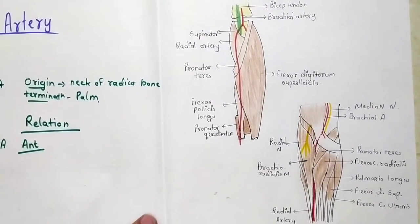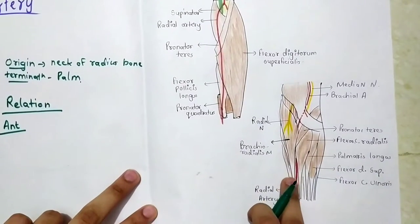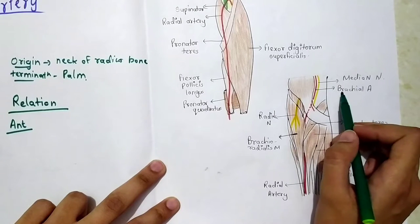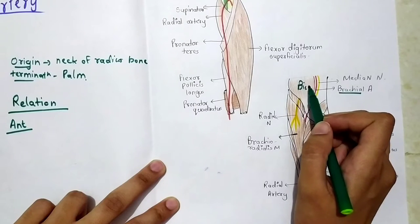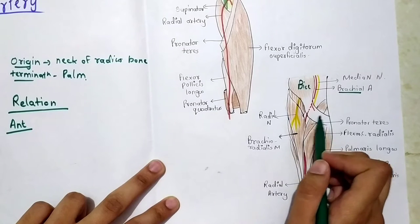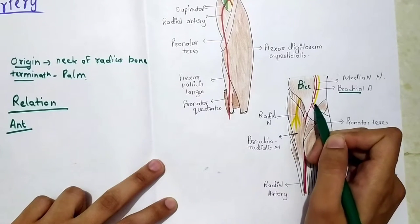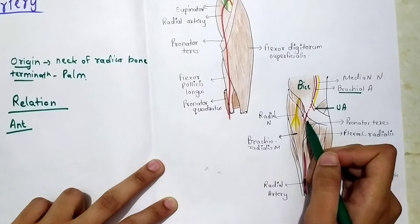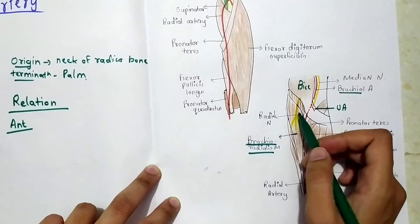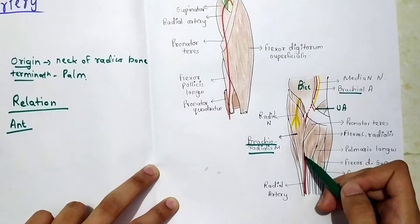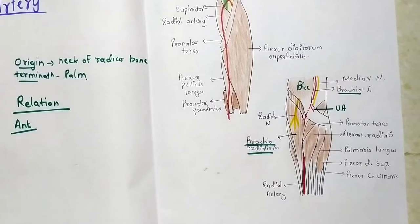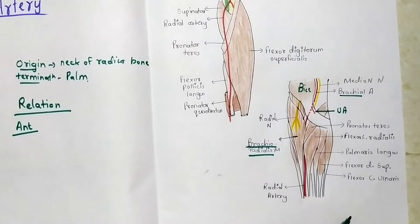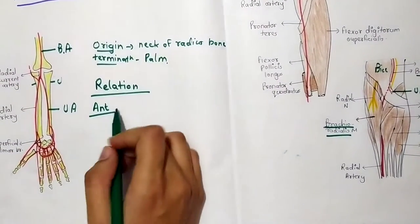There are two diagrams for relations: one showing the posterior relation and one showing the anterior, lateral, and medial relations. In the diagram you can see the brachial artery, the bicep muscle, and the bicipital aponeurosis. At the elbow region the brachial artery divides into the radial and ulnar arteries. The brachioradialis muscle covers the radial artery in half of its course, after which it is superficial. So the anterior relation is the brachioradialis muscle in the upper part.